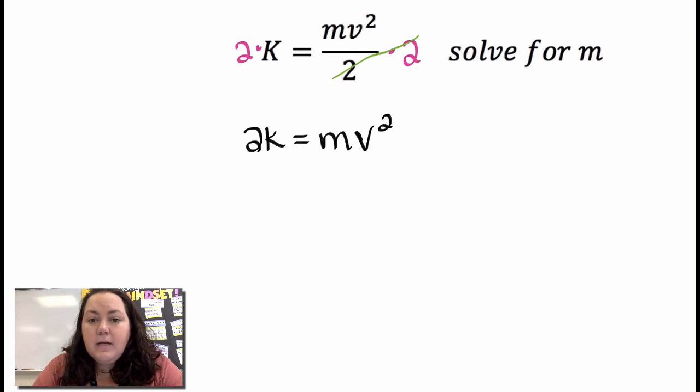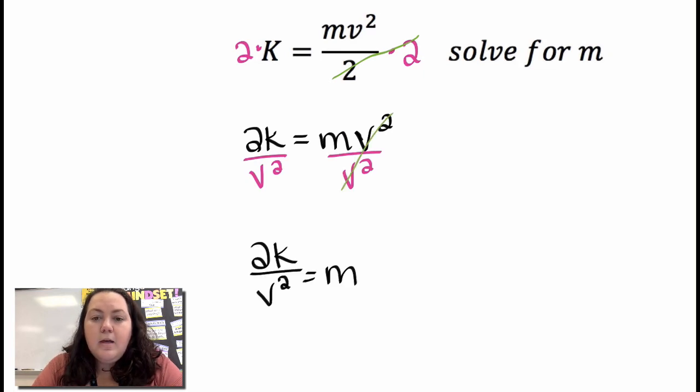They want me to get m by itself, so it's connected to a v squared by multiplication. So I'll divide both sides by v squared and I get m equals 2k over v squared.